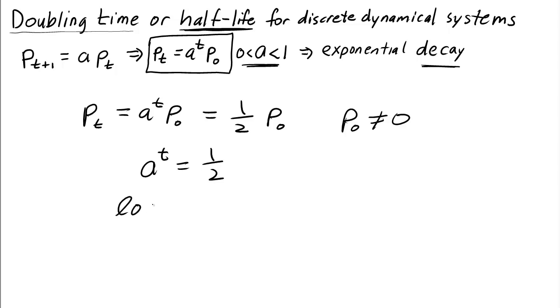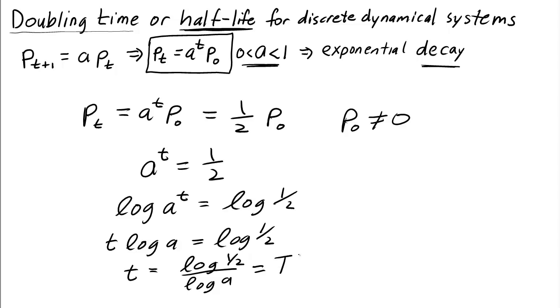We take logarithms of both sides, move t outside the logarithm, and find that the time it takes for the system to reach one half its original value is log one half over log a. This is the half-life.